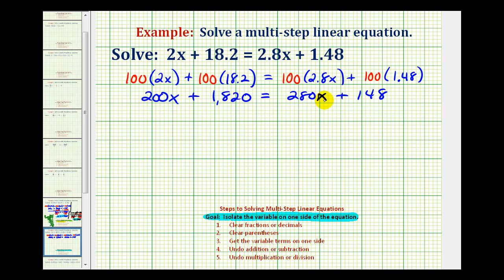Now looking at the equivalent equation, notice how we do have x terms on both sides of the equation. If our goal is to isolate x, we do have to have it on one side of the equation. So to get the variable terms on one side, we either have to subtract 200x on both sides to eliminate this variable term, or we have to subtract 280x on both sides to eliminate this term.